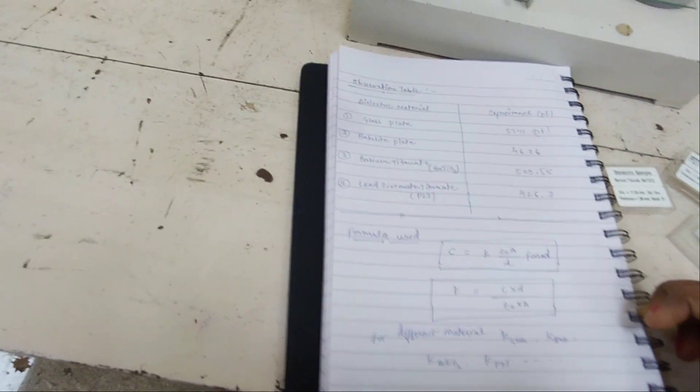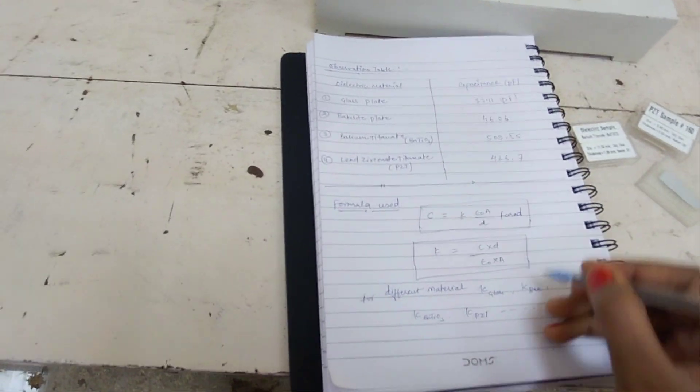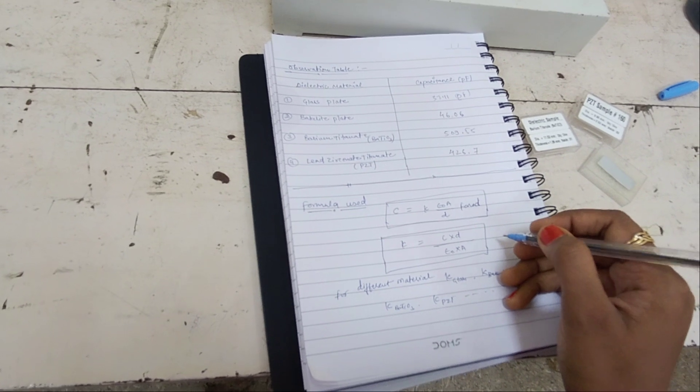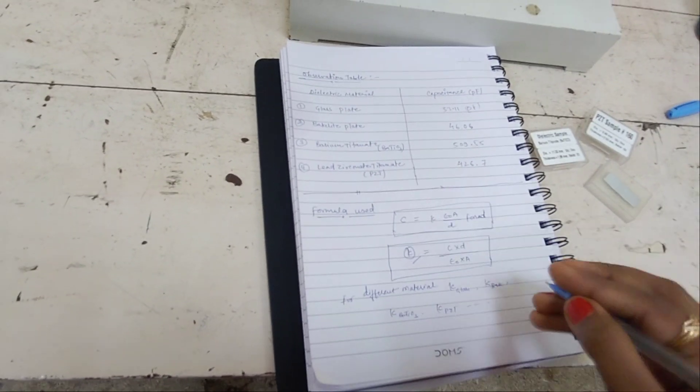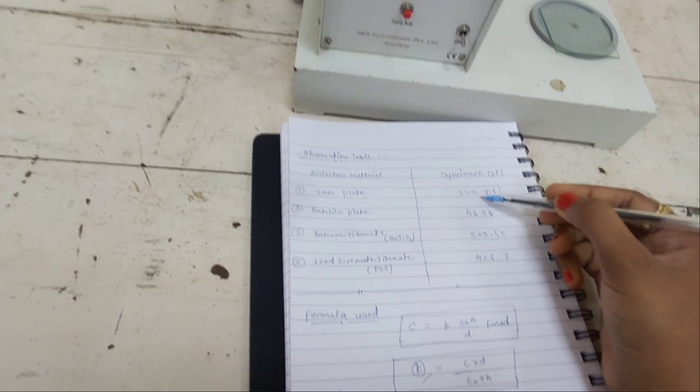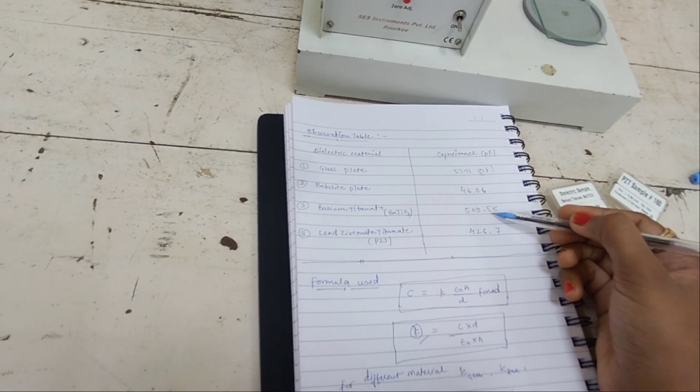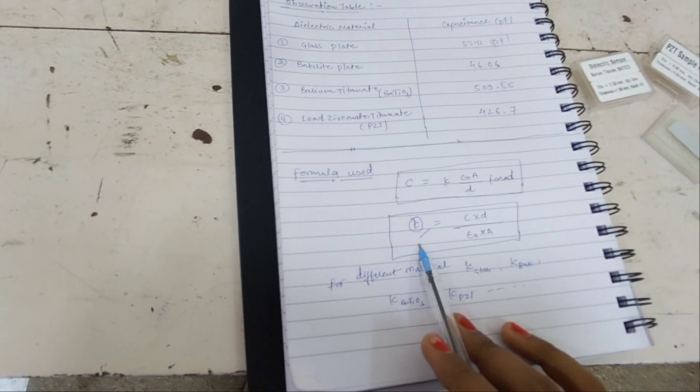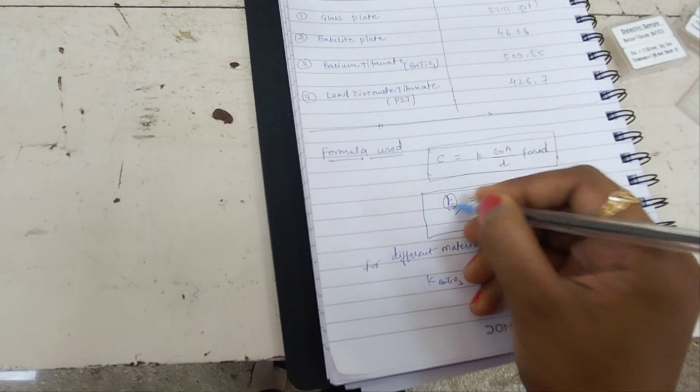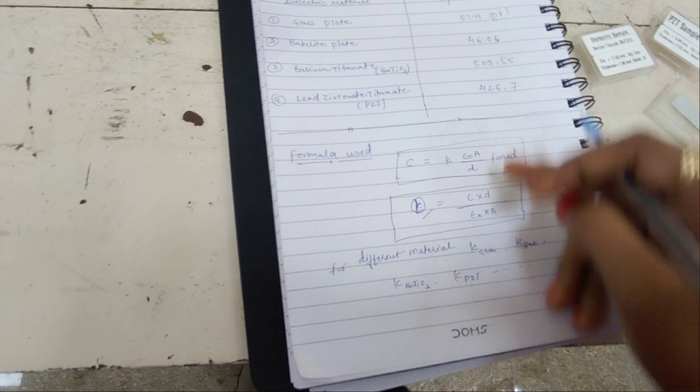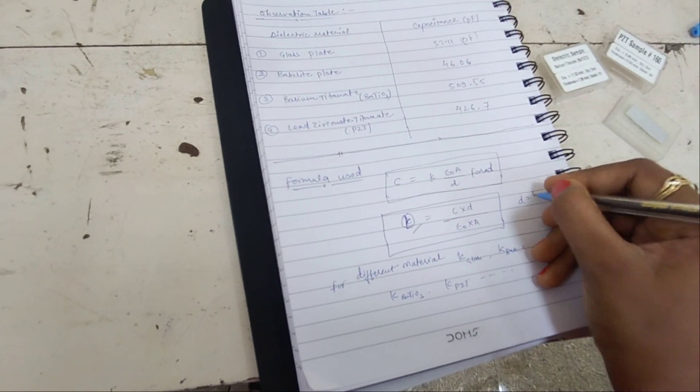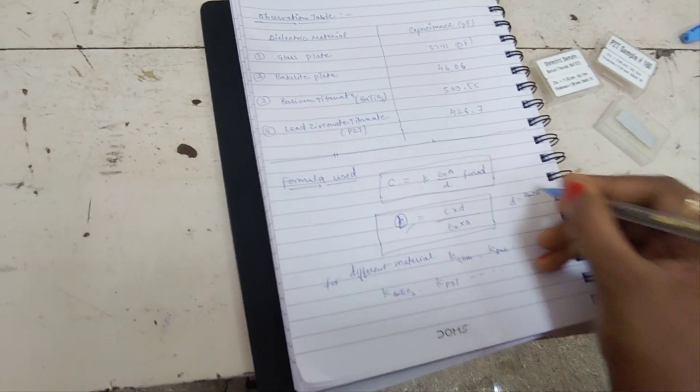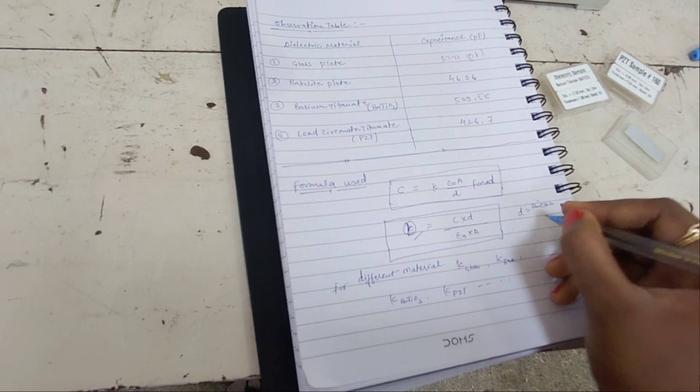Now your next task is to find out the dielectric constant for different materials. You have to note down your capacitance value for glass plate, bakelite, barium titanate, and lead zirconate. You have a formula κ = C × d / (ε₀ × A). You have a value of C, and d is the thickness of sample which is given in your manual.